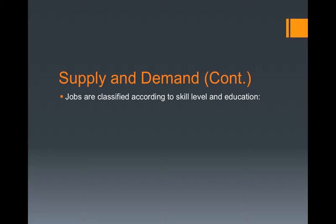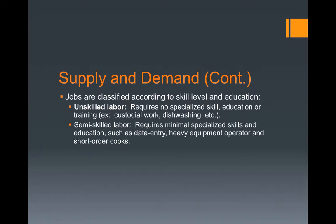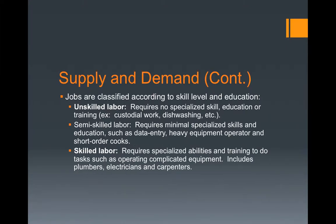Jobs are classified according to skill level and education. Unskilled labor requires no specialized skill, education, or training — for example, custodial work and dishwashing. Semi-skilled labor requires minimal specialized skills and education, such as data entry, heavy equipment operator, and short order cook. Skilled labor requires specialized abilities and training to do tasks such as operating complicated equipment, and includes plumbers, electricians, and carpenters.